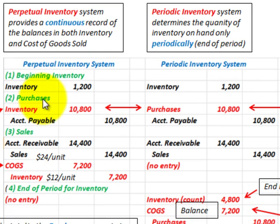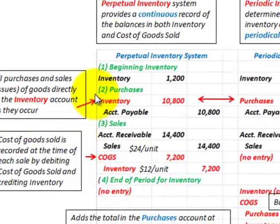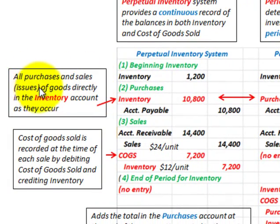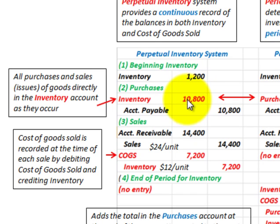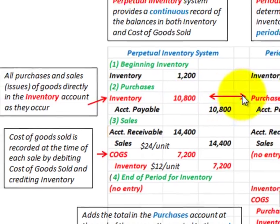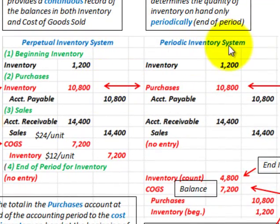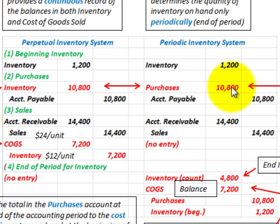Now we get into purchases for the period. With the perpetual inventory system, we have our inventory account debited for $10,800 for purchases. All purchases and sales go directly into the inventory account as they occur. With the periodic inventory system, we don't use an inventory account for purchases — instead, we have a separate purchases account, also debited for $10,800.